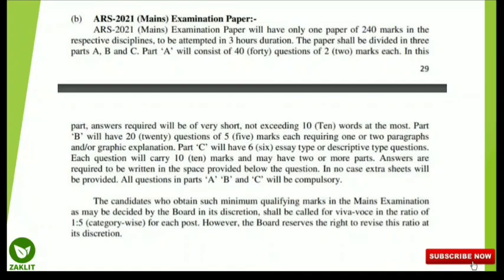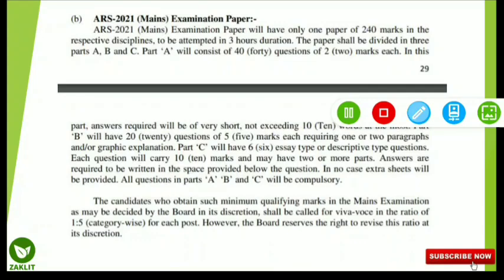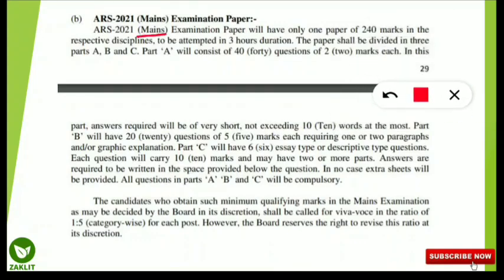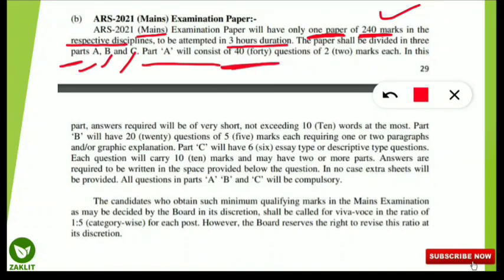The ARS mains examination paper will have only one paper of a total of 240 marks in the respective discipline, to be attempted in three hours duration. The paper shall be divided into three parts: Part A, Part B, and Part C. Part A will consist of 40 questions, each carrying two marks, and answers are required to be very short — not exceeding 10 words at the most. You should be specific and not exceed 10 words for Part A.